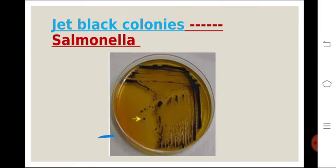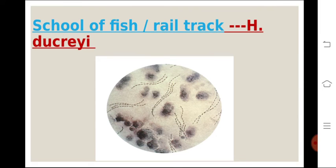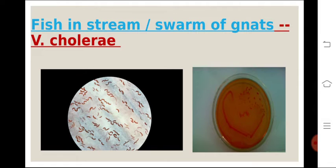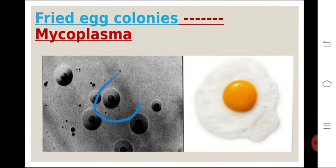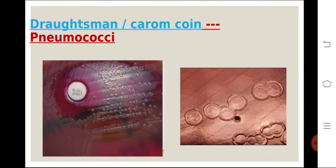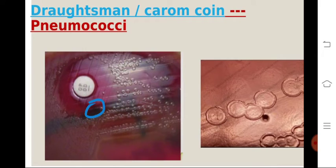Jet black colonies are typical of Salmonella. School of fish or rail track appearance is for H. Ducreyi — you can google more pictures for it. Fish in a stream or swarm of gnats is for Vibrio cholerae; you can see comma-like organisms showing darting motility for Vibrio cholerae. Fried egg colony is the typical appearance of Mycoplasma. Draughtsman or carom coin colonies for Neisseria — you can see coin-like structures typical of Neisseria in the real colony picture.